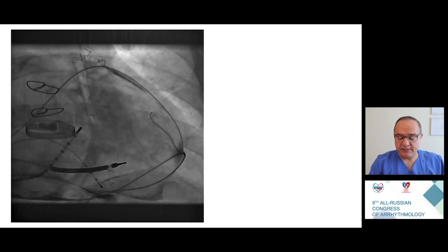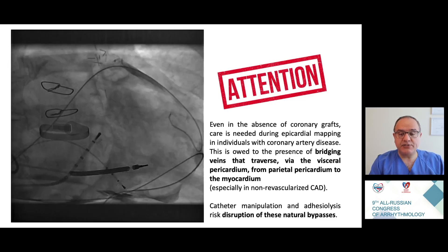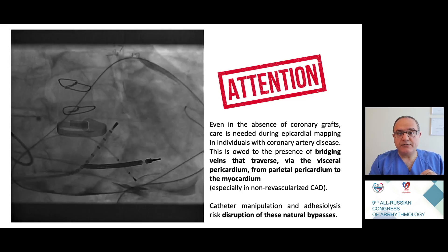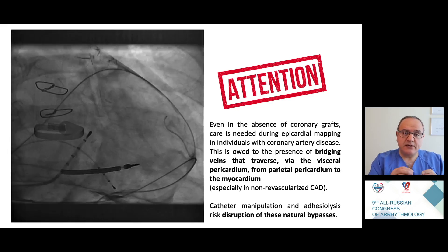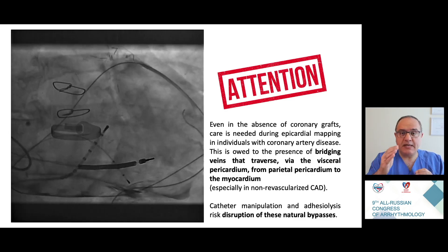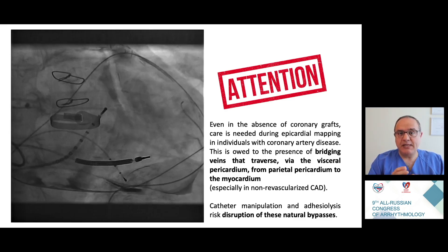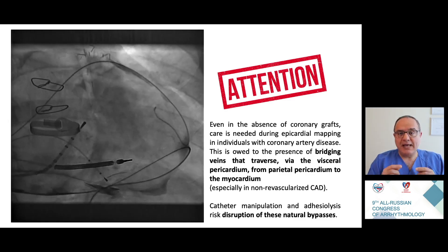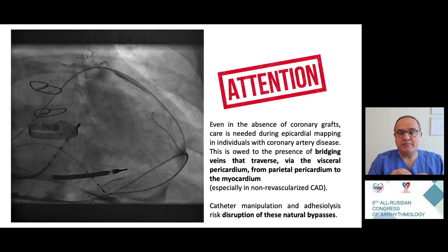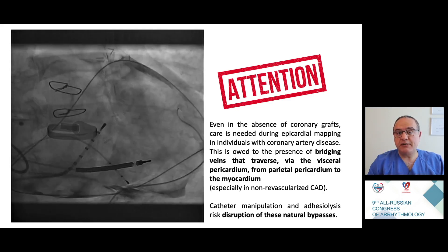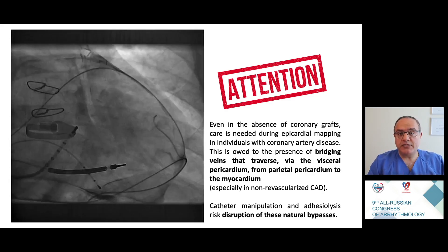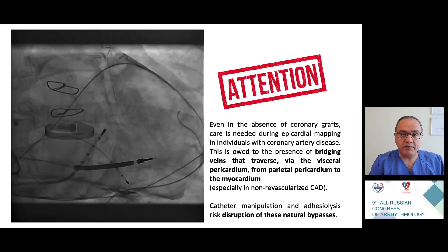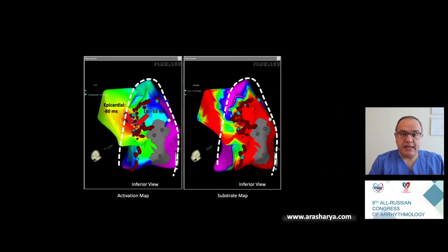In patients with coronary artery disease, especially those who are not completely revascularized, there are small venous bridges between the parietal and visceral epicardium. These bridges can be damaged during catheter movement. We have to be careful about these cases. Here is the epicardial activation and substrate map showing the successful ablation site after gaining access to the epicardial space in this patient.